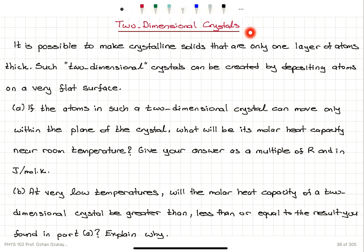Two-dimensional crystals. It's possible to make crystalline solids that are only one layer of atoms thick. Such two-dimensional crystals can be created by depositing atoms on a very flat surface.